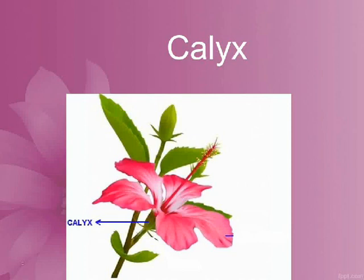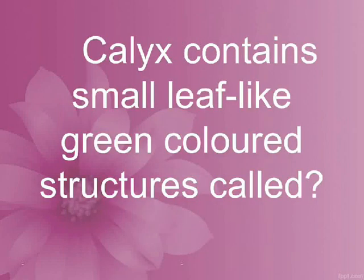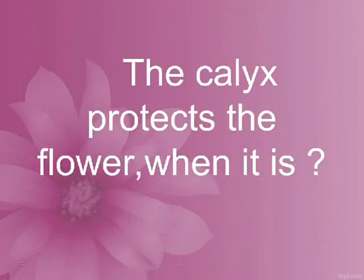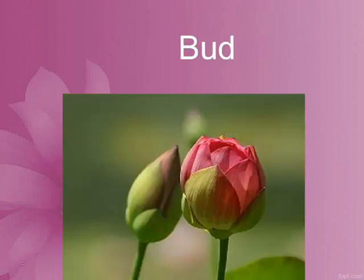Calyx. Calyx contains small leaf-like green-colored structures called sepals. The calyx protects the flower when it is a bud.